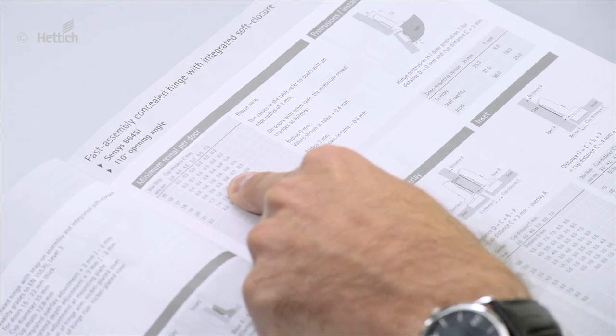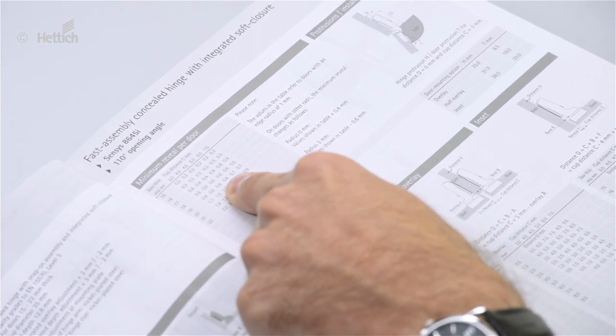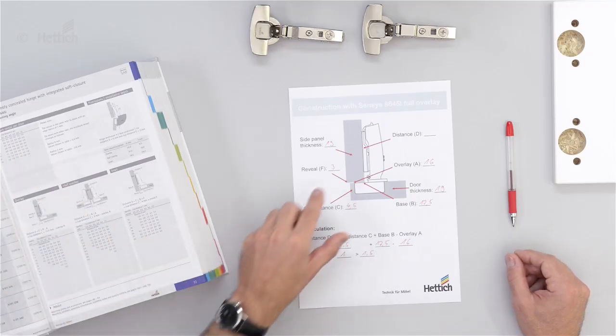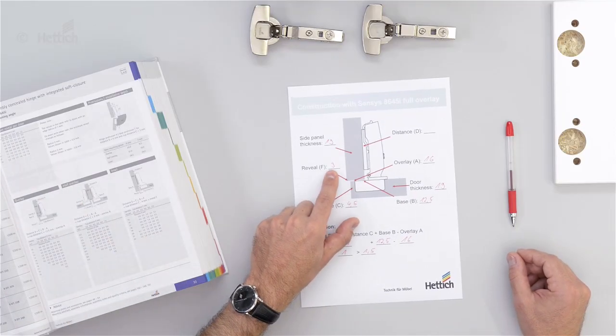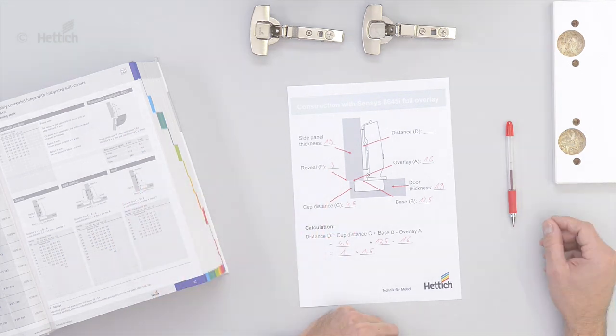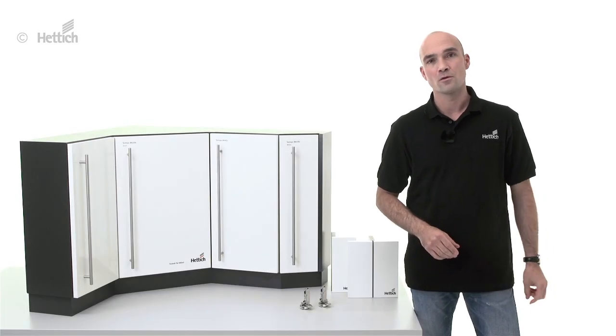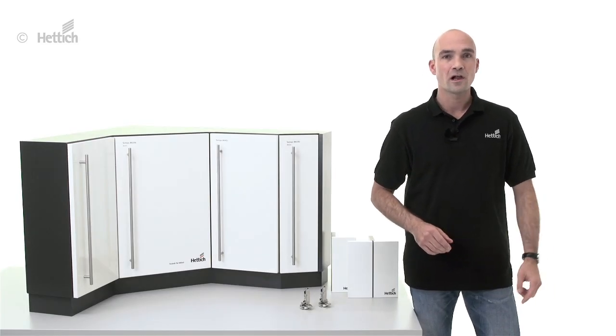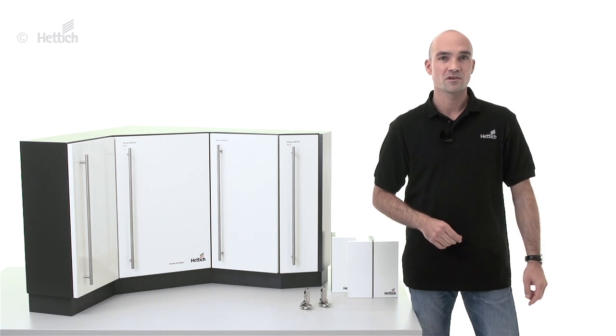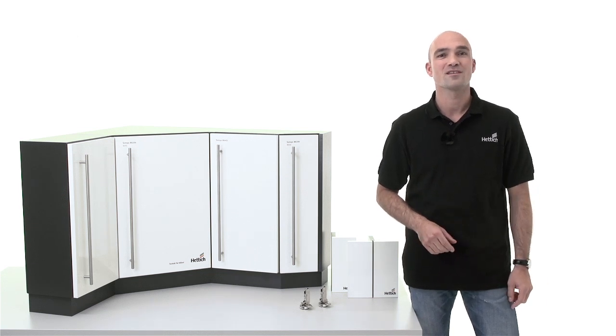So the minimum reveal has to be 0.8mm. We have in this example a reveal of 3mm, so it's all good. We hope that this video was interesting for you and that it will help you when designing your next cabinet with overlay applications. Thank you for watching and until next time.